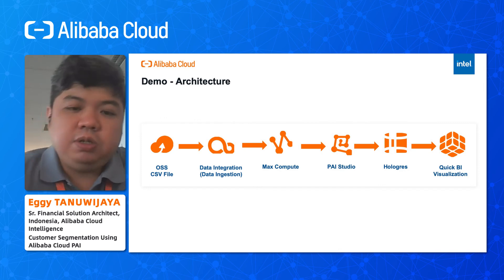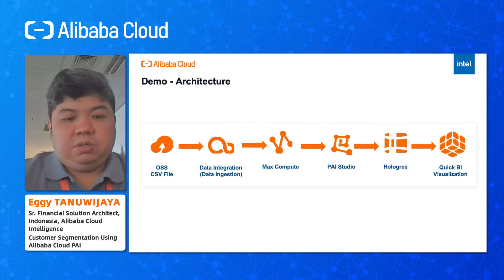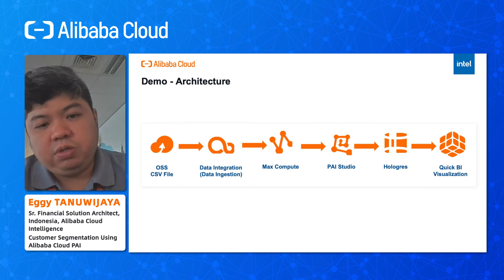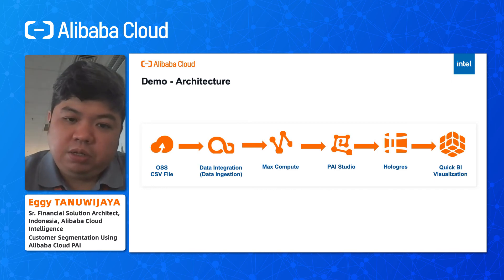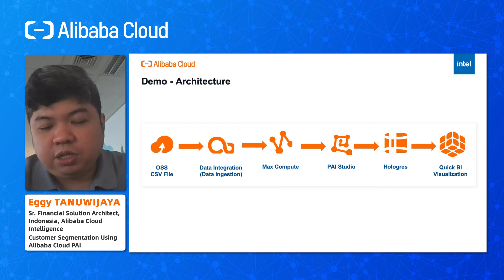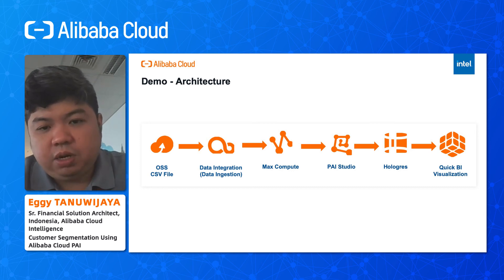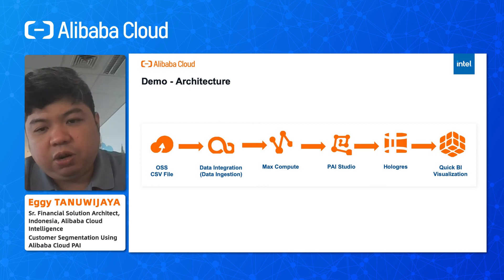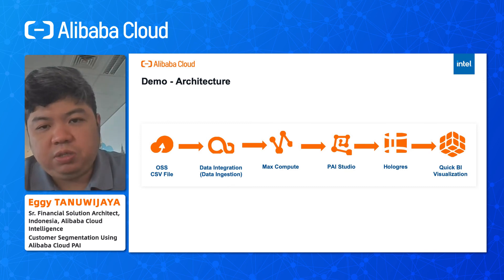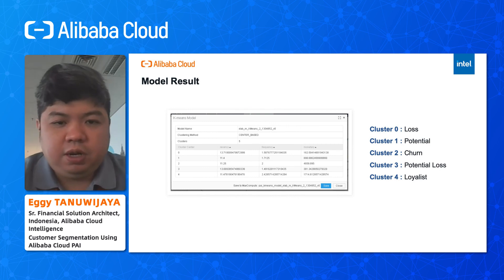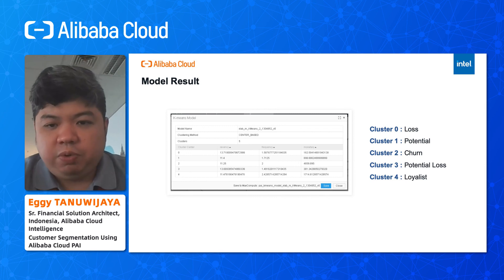What is the architecture of this demo? First, the data will be uploaded to OSS. Then I will use Data Integration to ingest from OSS to MaxCompute. From MaxCompute, the data will be served to PAI Studio, which will apply algorithms to create customer segmentation. The clustering results will be stored in Hologres, and users can use QuickBI for visualization from the Hologres results. Before we start the demo, I will preview the result — we will divide it into five clusters.